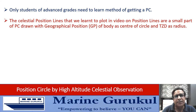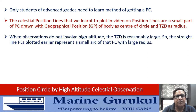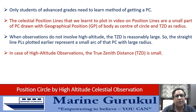The celestial position lines that we learn to plot in the video on position lines are a small part of the position circle drawn with the geographical position of the body as the center and the true zenith distance, or TZD, as the radius. When observations do not involve high altitude, the TZD is reasonably large, so the curvature of the circumference of the circle becomes lesser, and hence the straight line PL plotted earlier represented only a small arc of the position circle with a large radius.